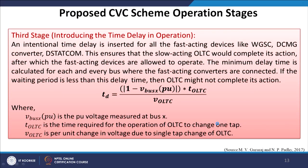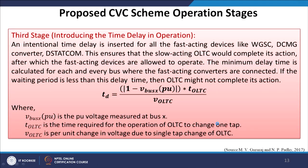An intentional time delay is inserted for all fast-acting devices like the WGSC, DC microgrid converter, and DSTATCOM. This ensures that the slow-acting OLTC would complete its action first. As discussed earlier, when all fast-acting devices act simultaneously, the slow-acting devices may not contribute much. So the slow devices like OLTC are allowed to act first, after which the fast-acting devices are allowed to operate.